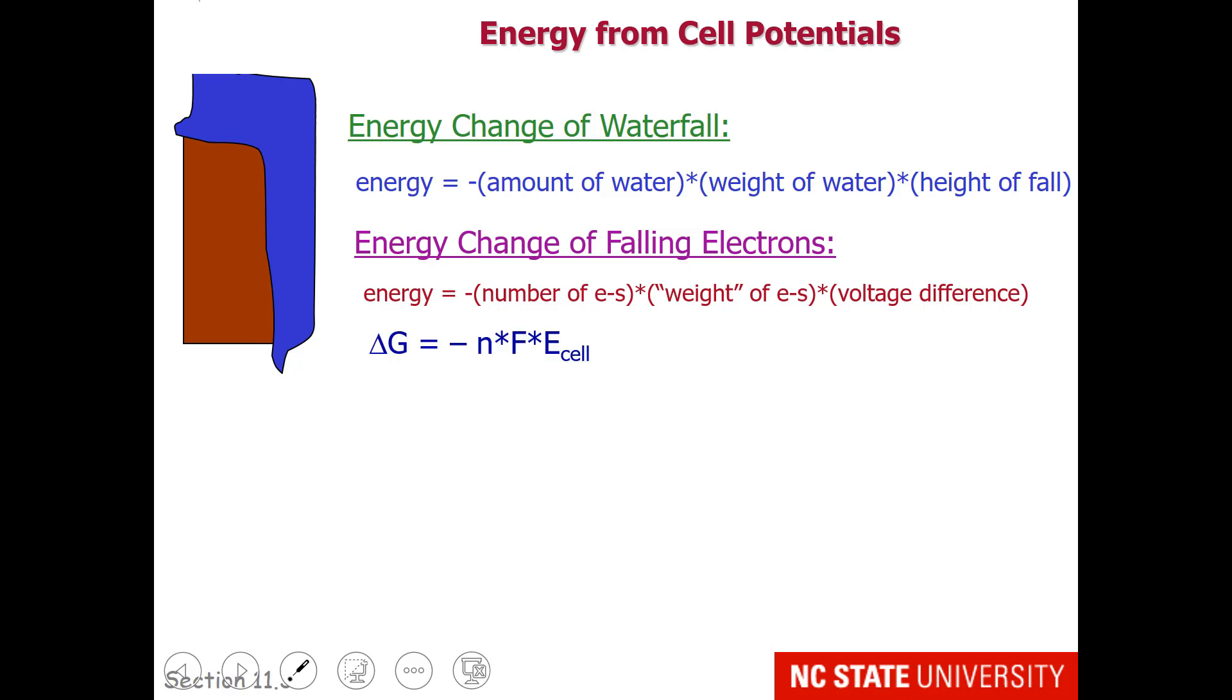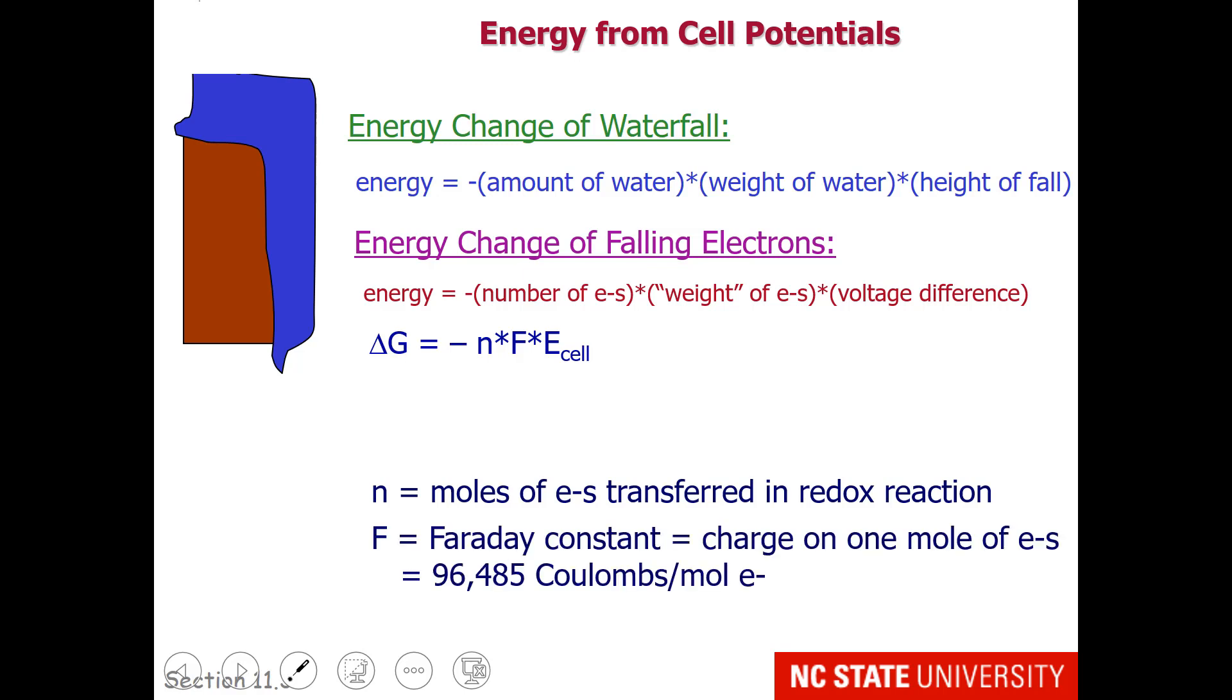So in formula speak, the free energy change is equal to minus NFE cell. N is the moles of electrons transferred in a redox reaction. F is the Faraday constant. That is the charge on 1 mole of electrons, which turns out to be 96,485 coulombs per mole of electron. The energy change from the fall, or E cell, we represent as the energy level of the cathode minus the energy level of the anode, which we measure in volts.